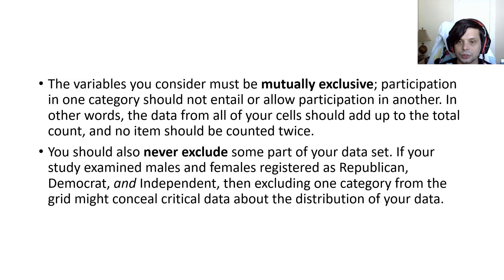The variables you consider must be mutually exclusive. Participation in one category should not entail or allow participation in another. In other words, the data from your cells should be added to the total count and no item should be counted twice. So don't overlap your data when you're coding. Remember that problem we had with age, if you construct your categories as age 20 through 23 and 23, 22 through 26, you're counting 23-year-olds twice, which is not what you want to be doing. So make sure you're separating your age groups actually being 18 through 22 and 23 through 25. That way you don't count one person twice. You should also never exclude some part of your data set. If you study to examine males and females registered Republican, Democrat, and Independent, then excluding one category from the grid might conceal critical data about the distribution of your data. In other words, you need, let's say we are doing the Republican, Democrat, and Independent. Well, you may also need another category to give other people that chance to respond to that. It matters a lot that you count everything. Because if you don't count everything, then your data is going to be off.